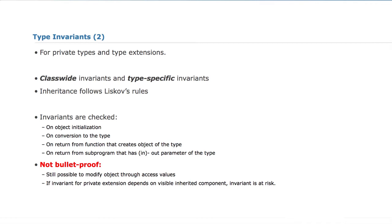Just as in the case of subprograms, there are issues with inheritance. There are type invariants that are type-specific and class-wide type invariants that are inherited by all the descendants. The invariant then guarantees the integrity of an object, and the language specifies where you check that this type invariant holds — essentially as post-conditions on things that manipulate this type. Whenever you create an object of the type, convert to the type, return from a function, or return from a subprogram that has an out or in-out parameter of that type, you check the invariant. This is only true for operations visible to a user of the type — inside the package that has access to the internals, between two calls the invariant might not hold, but once it returns to a user, the invariant must hold.